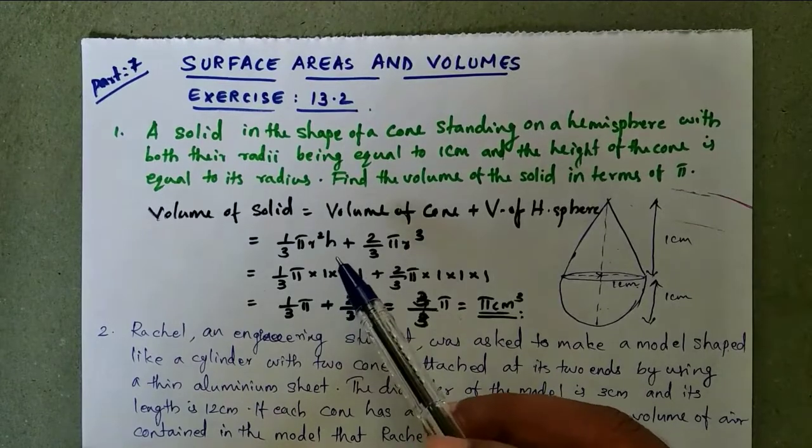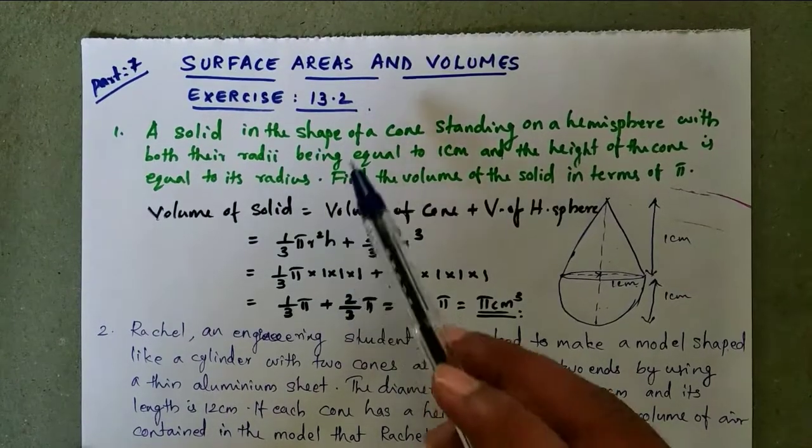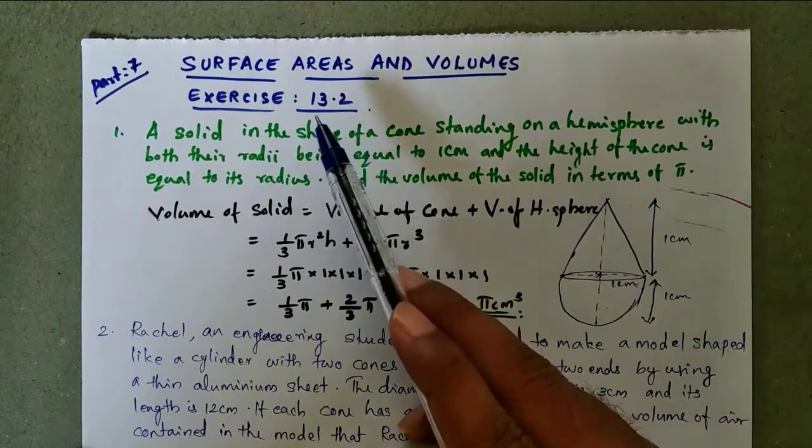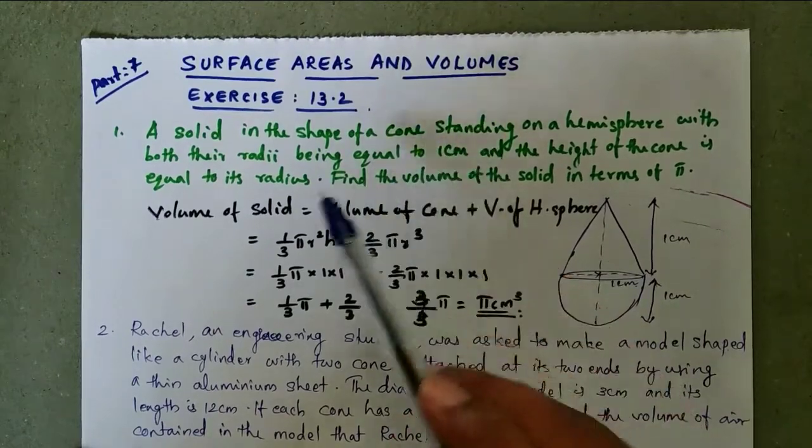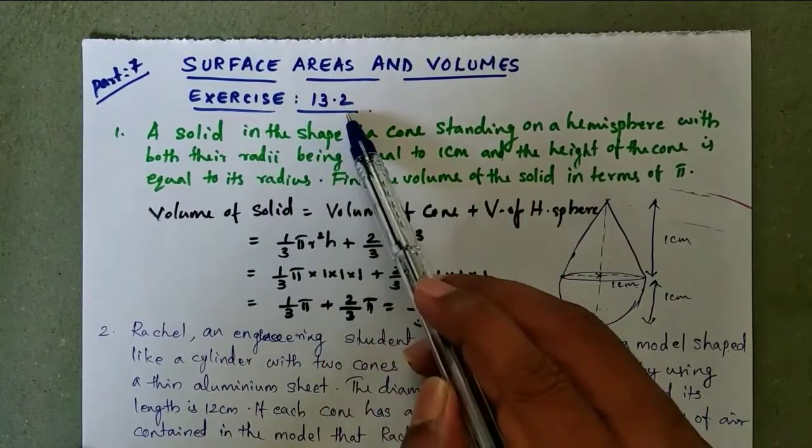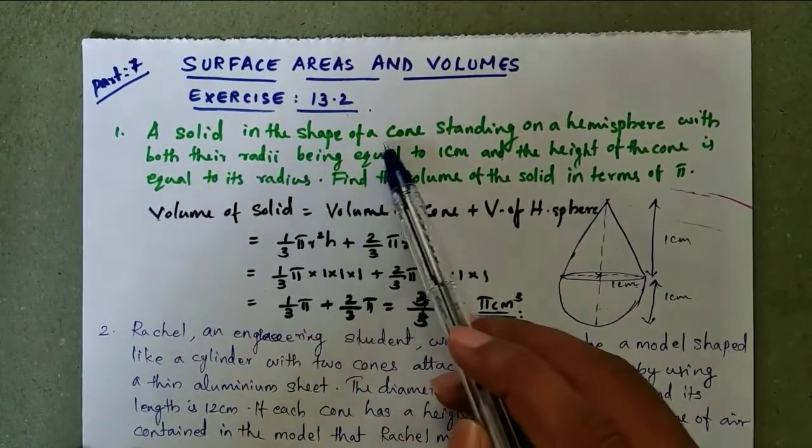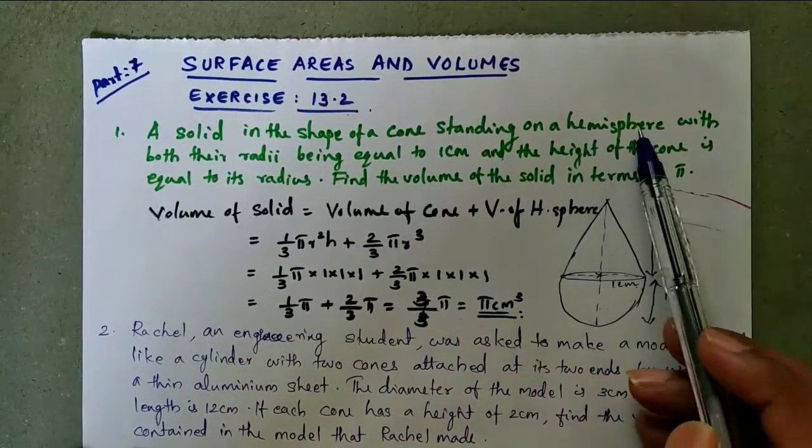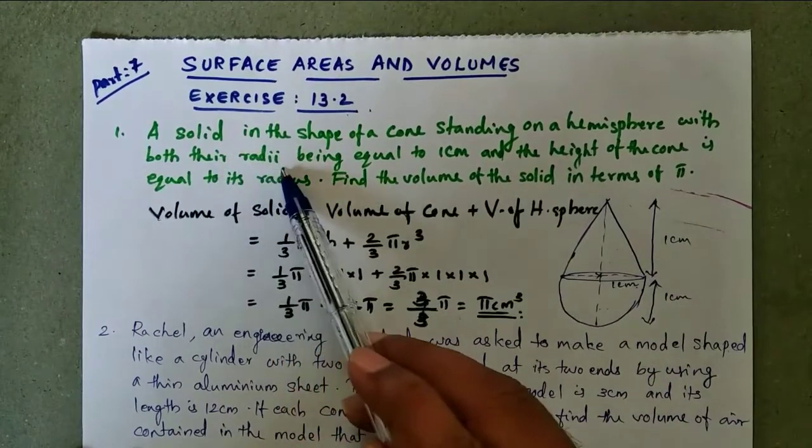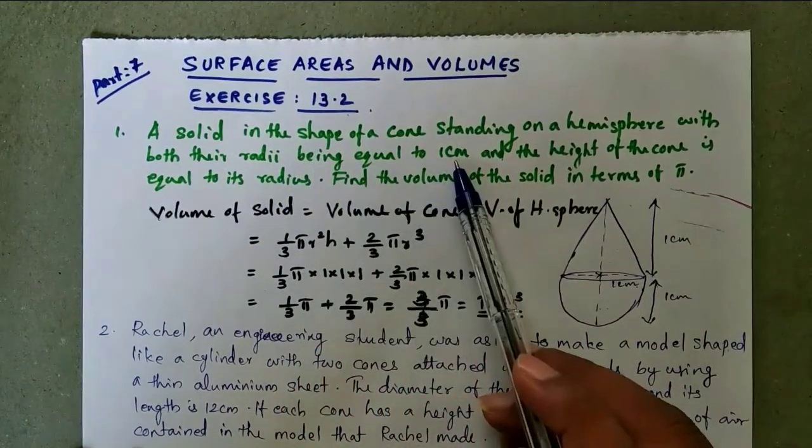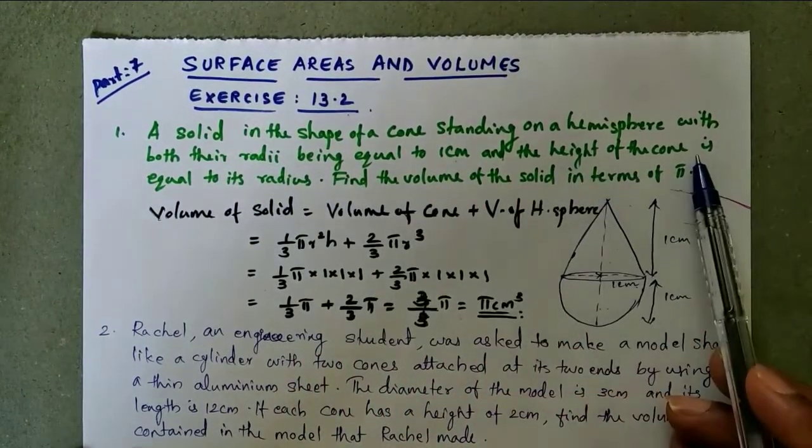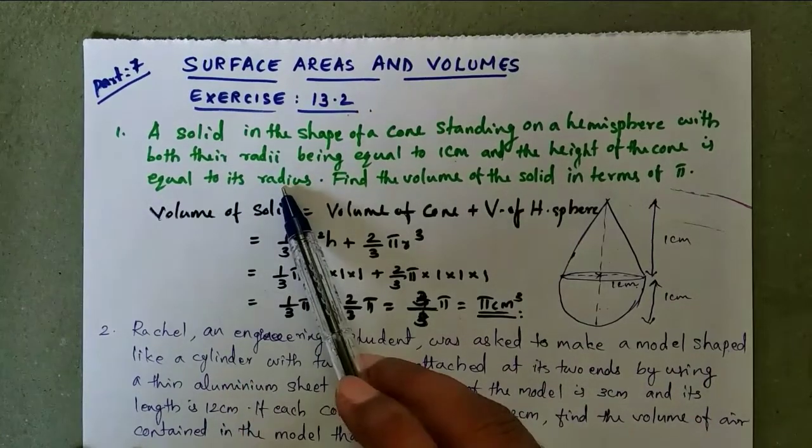Dear students, welcome to my video. Last day we discussed exercise number 13.1 from surface area and volumes. Now, exercise number 13.2, question number one: A solid in the shape of a cone standing on a hemisphere with both the radii being equal to one centimeter and the height of the cone is equal to its radius. Find the volume of the solid in terms of pi.